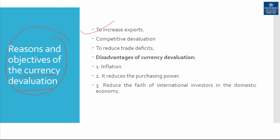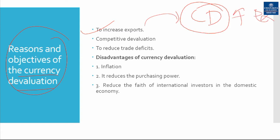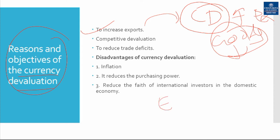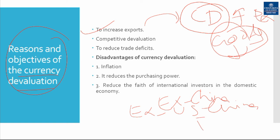The first reason for currency devaluation is to increase exports. Countries go for currency devaluation to boost their exports in the international market, because devaluation makes their goods cheaper for foreign buyers. For example, China has reduced its currency value so that its goods are less expensive internationally and more competitive. The most recent example is the US-China trade war, which was essentially both countries devaluing their currencies to gain trade preferences.